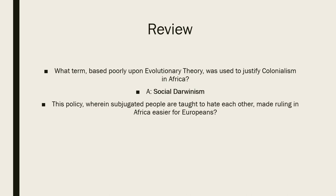However, in Social Darwinism it's believed that those who are strong rule because they deserve to rule because they are strong, and the weak deserve to be subjugated because they are weak. So what policy, wherein subjugated people are taught to hate each other, made ruling in Africa as well as other places easier for Europeans?